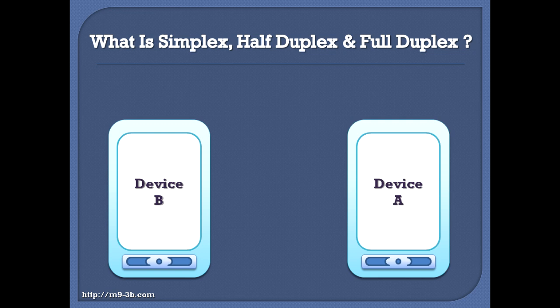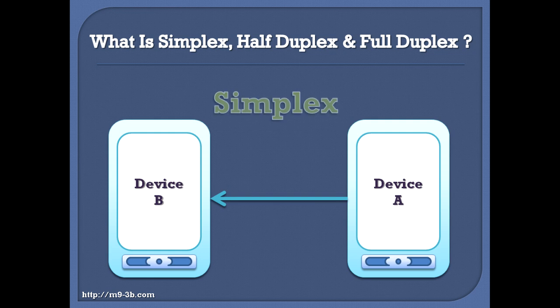Let's say that we have two devices, device A and device B. If device A can transmit only and device B can receive only, then the communication between them is called Simplex. So Simplex is a one-way communication where one of the devices can transmit only and the other can receive only. An example of a Simplex device is a pager.